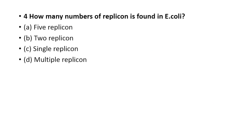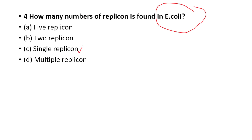How many replicons are found in E. coli? Option A: 5 replicons. Option B: 2 replicons. Option C: single replicon. Option D: multiple replicons. The answer is Option C — E. coli has only a single replicon.